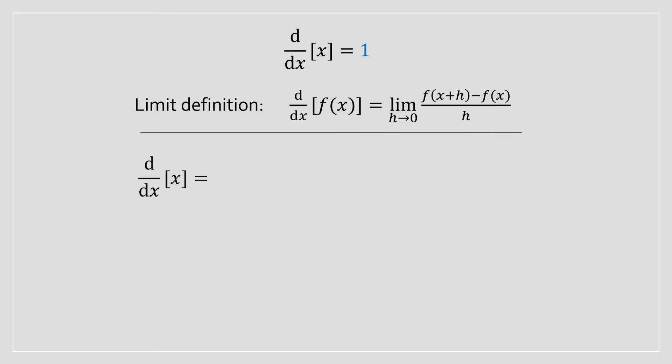So, we're going to rewrite this f of x function, in this case it's just equal to x, in terms of this. And once you do that, you're going to have x plus h minus x divided by h.